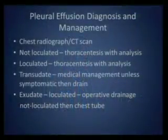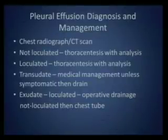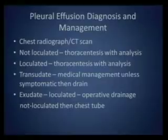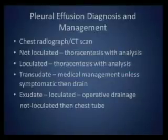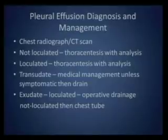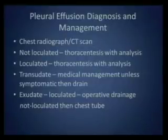So how do you diagnose these? Chest x-ray first and foremost. Lateral decubitus is very important - you can't tell the difference between atelectasis and pleural effusion just on a plain film. You can proceed to CT scan, which is generally what happens in the emergency room. If it's not loculated, do a thoracentesis with analysis and you can do it blindly. If it is loculated, do a thoracentesis with analysis but you may need help with ultrasound or get the interventional radiologist. If it's a transudate, medical management of the underlying problem unless they're symptomatic. If it's exudative and loculated, you want operative drainage - not a chest tube in a loculated effusion, it does absolutely no good. If it's not loculated, then you can try a chest tube up front.